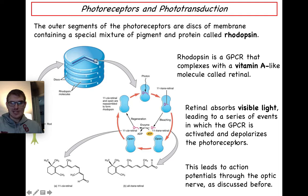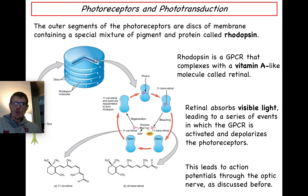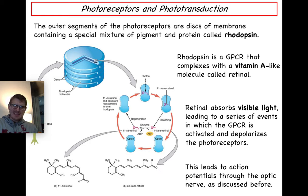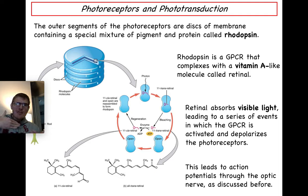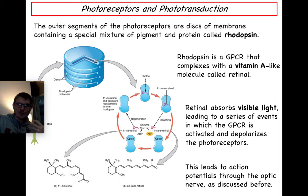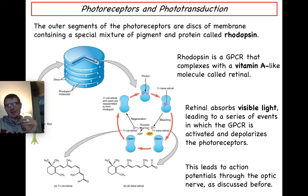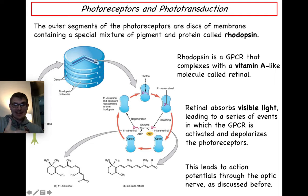This leads to action potentials coursing through the optic nerve. One counterintuitive aspect worth noting: in darkness, photoreceptors actually constantly release inhibitory neurotransmitter onto bipolar cells. When light stimulates the photoreceptor, it doesn't release excitatory neurotransmitter — it simply stops releasing the inhibitory ones, and that causes the bipolar cells to become excited. It's a strange mechanism, but the key takeaway is that rhodopsin absorbs light, activates the photoreceptor, and that leads to action potentials through the optic nerve.